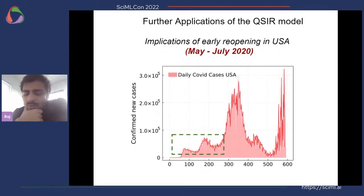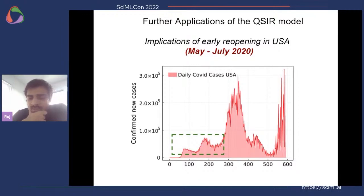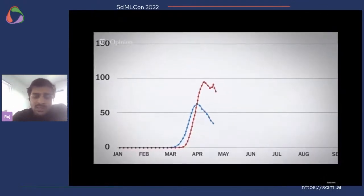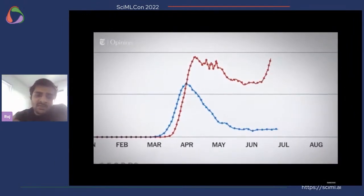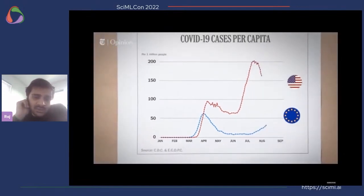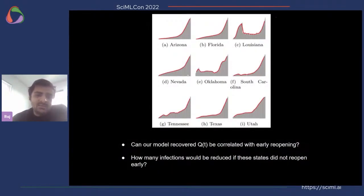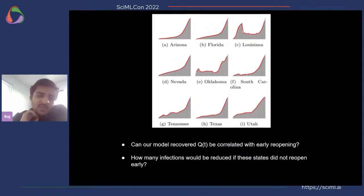We wanted to further test this model in a different setting. We chose the time period of May to July 2020 and looked at what happened in the United States during this period. During May to July 2020, cases in Europe were reducing and stagnating, but there was an exponential explosion in the number of cases in especially the southern and west central United States. We looked at nine states that showed a huge surge in infections and asked whether the QSIR model's recovered Q could be correlated with early reopening in these states, and how many infections would have been reduced if these states had not reopened early.